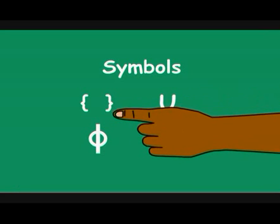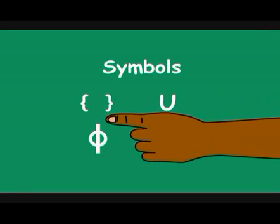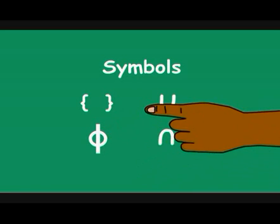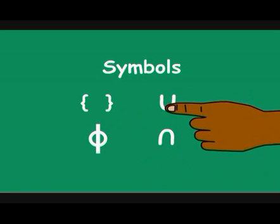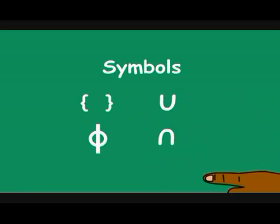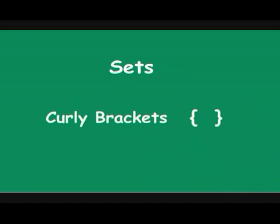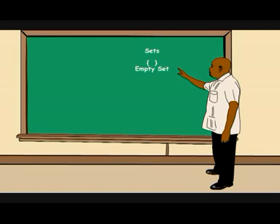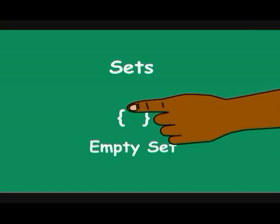We can use symbols or mathematical notation to represent what we are speaking about. A set can be represented by curly brackets. A set like this is called an empty set. That is, if you have curly brackets and nothing inside,